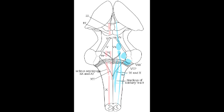What is the mnemonic to help you remember that nucleus solitarius is for sensory information and nucleus ambiguus is for motor innervation? Remember that nucleus solitarius has the letter S — S for solitarius, S for sensory — whereas nucleus ambiguus has the letter M in it, and that M stands for motor innervation.